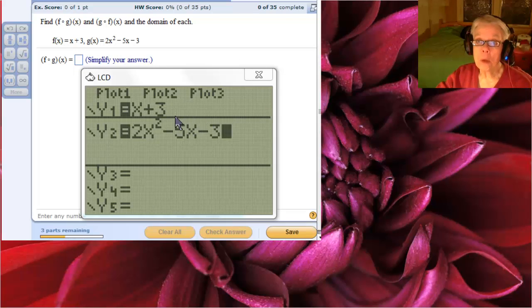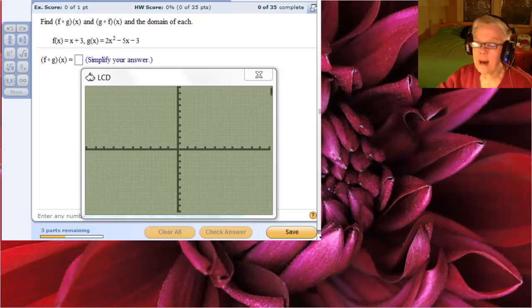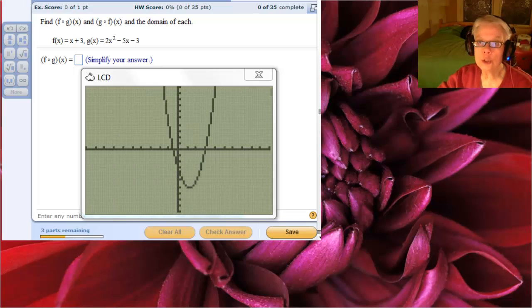Now we're going to graph these because we need to know the domain of each. Let's do that. I'm going to move up to y1, go over to the equal sign and hit enter to turn it off for a minute. Then I'm going to graph y2, which is 2x squared minus 5x minus 3.